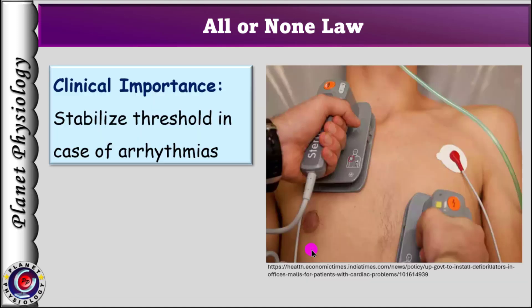Understanding the All or None Law is not just academic — it is clinically important as well. In certain conditions, abnormal stimuli can cause inappropriate or uncoordinated contractions leading to arrhythmias. Treatments often aim to stabilize the threshold level to ensure that only appropriate stimuli cause the heart to contract.